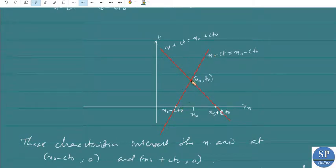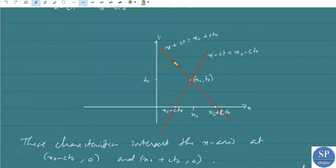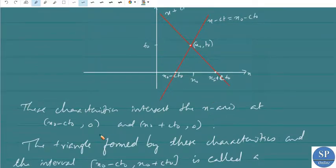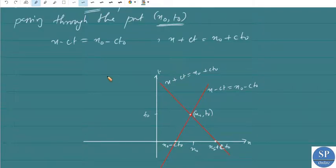The point (x0, t0) is plotted in the x-t plane. These characteristics intersect the x-axis at the points x0 minus ct0 and x0 plus ct0. The line x minus ct = x0 minus ct0 and the line x plus ct = x0 plus ct0 are the two characteristics through (x0, t0), intersecting the x-axis at those two points.